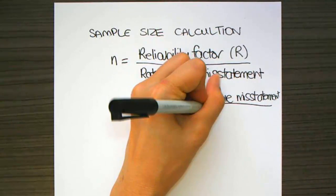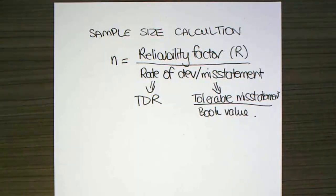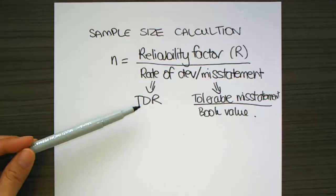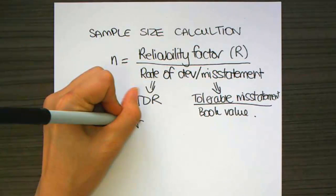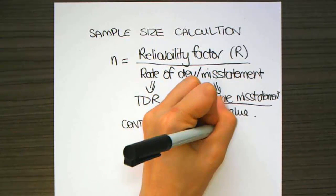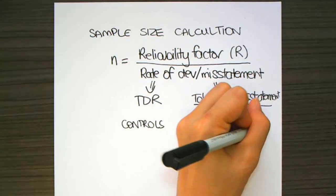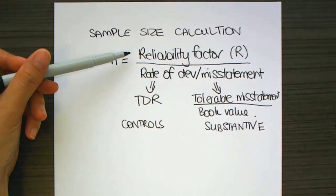So regardless of whether we're doing control testing, so this is controls, and this is substantive, the first part of the formula is still the same, reliability factor. Second part of the formula, the denominator, depends on whether you're testing controls or whether you are substantively testing.